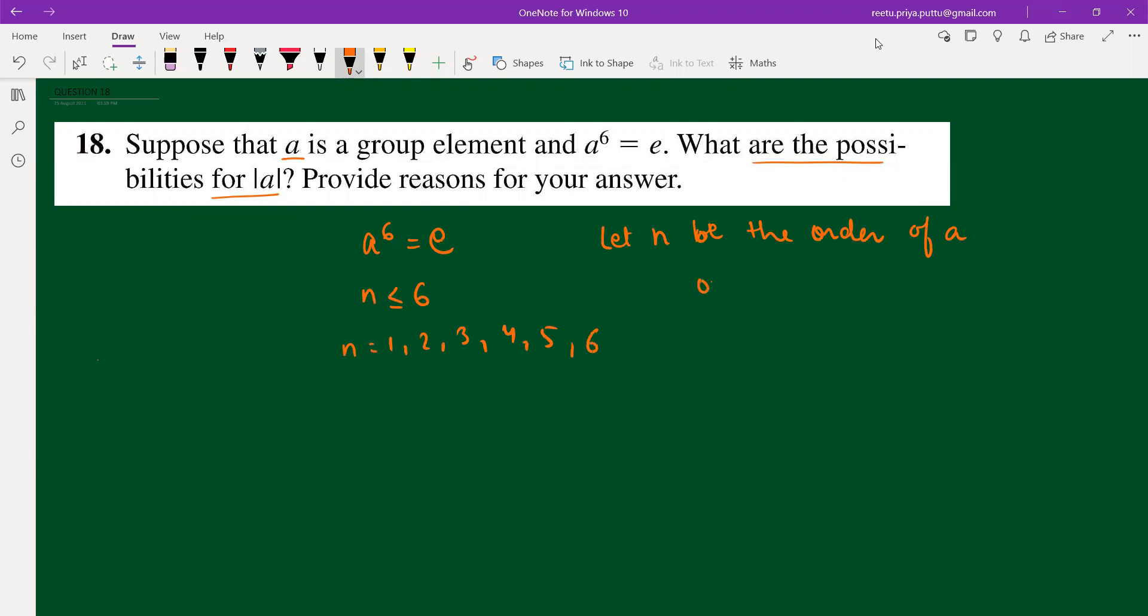But we also know that order of element divides. It must divide, because if order of A is 4, then A to the power 4 equals identity. Then A to the power 6 cannot be identity. So 4 cannot be there, 5 cannot be there.